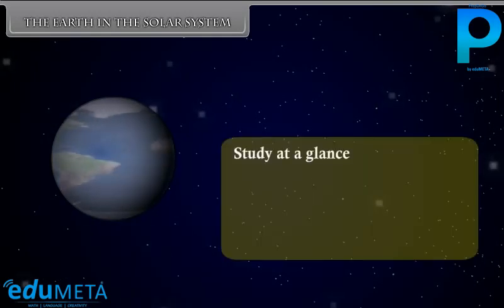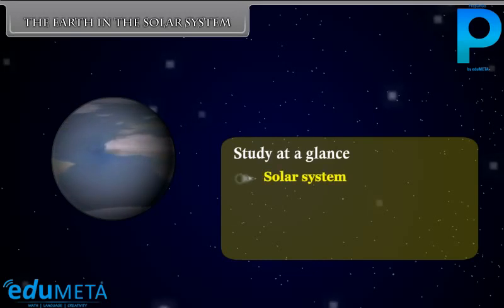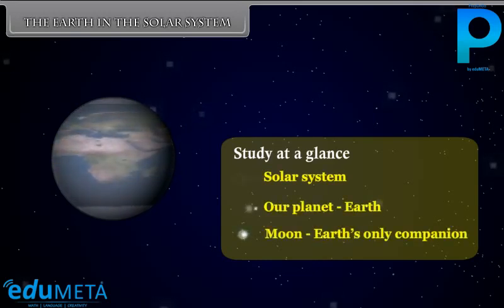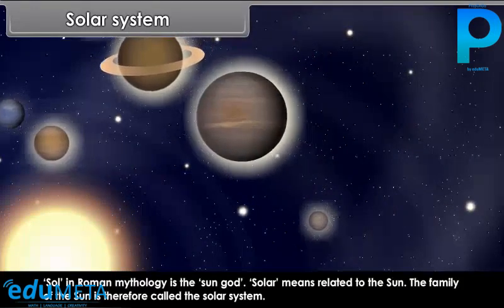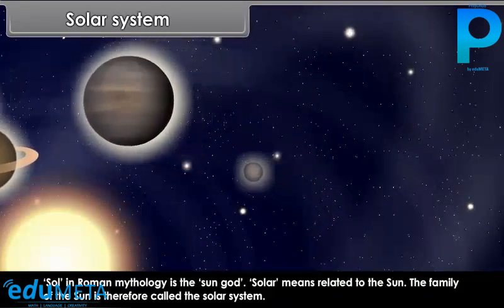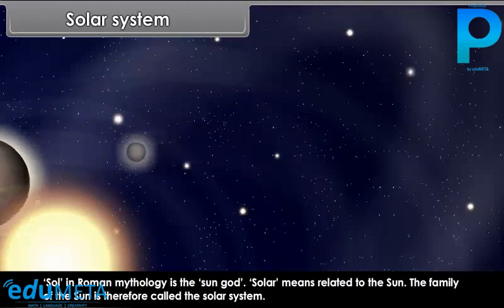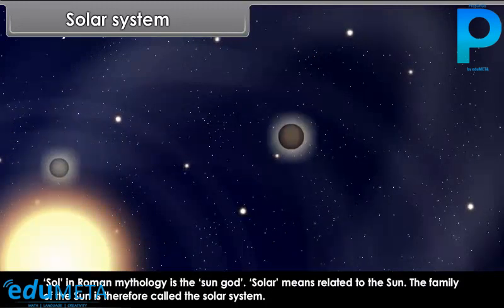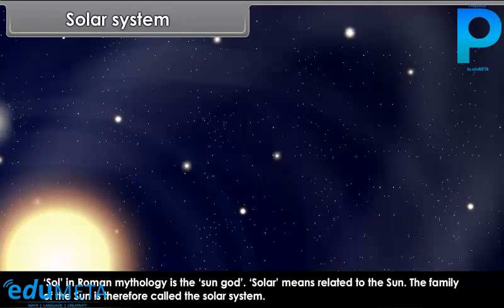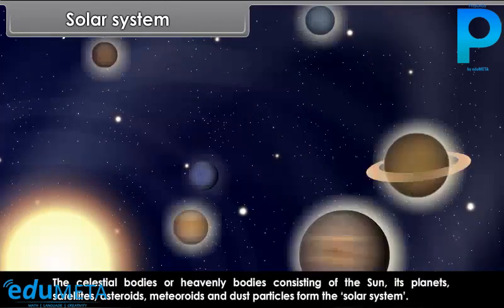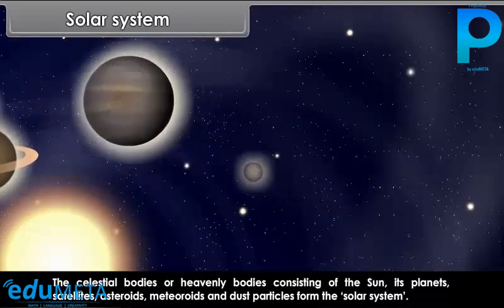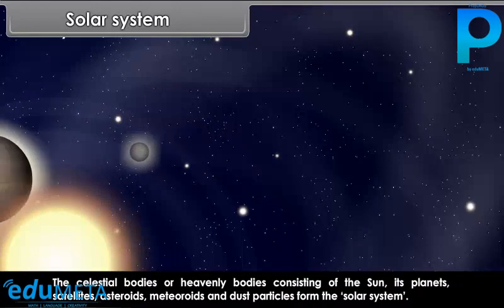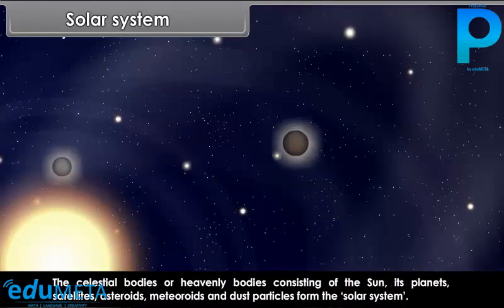Sol in Roman mythology is the sun god. Solar means related to the sun. The family of the sun is therefore called the solar system. The celestial bodies or heavenly bodies consisting of the sun, its planets, satellites, asteroids, meteoroids and dust particles form the solar system.